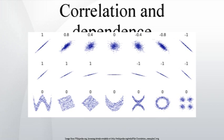Various correlation measures in use may be undefined for certain joint distributions of x and y. For example, the Pearson correlation coefficient is defined in terms of moments, and hence will be undefined if the moments are undefined. Measures of dependence based on quantiles are always defined. Sample-based statistics intended to estimate population measures of dependence may or may not have desirable statistical properties such as being unbiased or asymptotically consistent, based on the spatial structure of the population from which the data were sampled. Sensitivity to the data distribution can be used to an advantage — for example, scaled correlation is designed to use the sensitivity to the range in order to pick out correlations between fast components of time series. By reducing the range of values in a controlled manner, the correlations on long timescales are filtered out and only the correlations on short timescales are revealed.